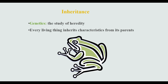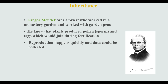Every living thing inherits its characteristics from its parents. I'd like to take a second to introduce Gregor Mendel. He was a priest who worked in a monastery garden and he worked with garden peas. He knew that garden pea plants produced sperm and eggs which would join with fertilization. He chose pea plants because reproduction happens very quickly and data could be collected quickly and in mass amounts.